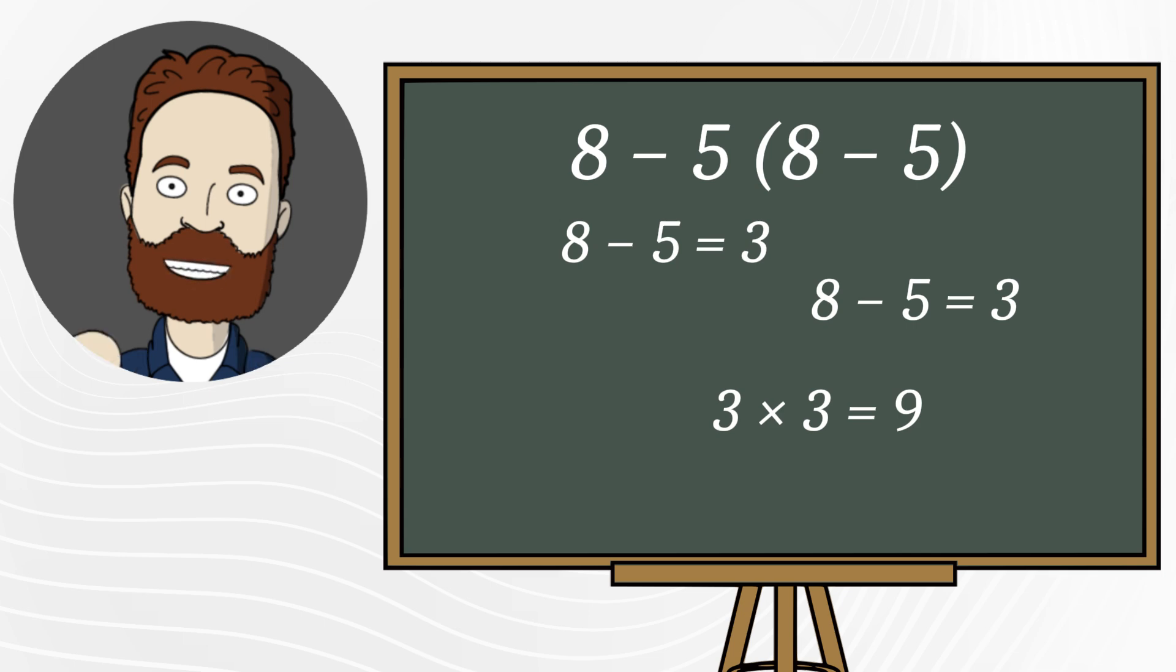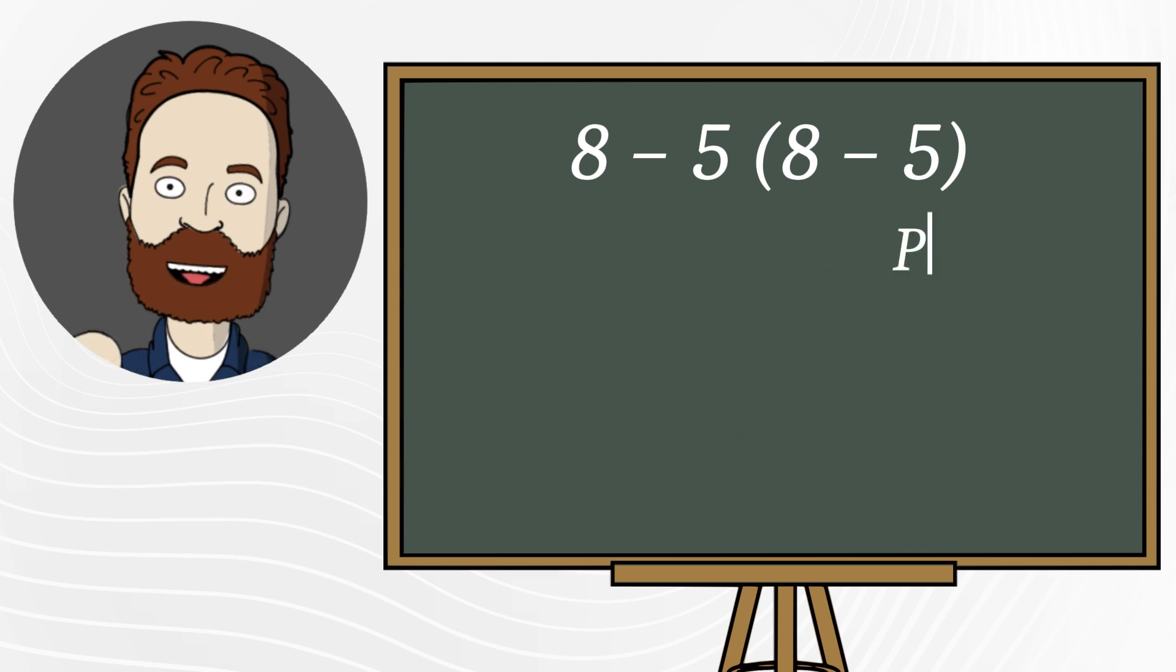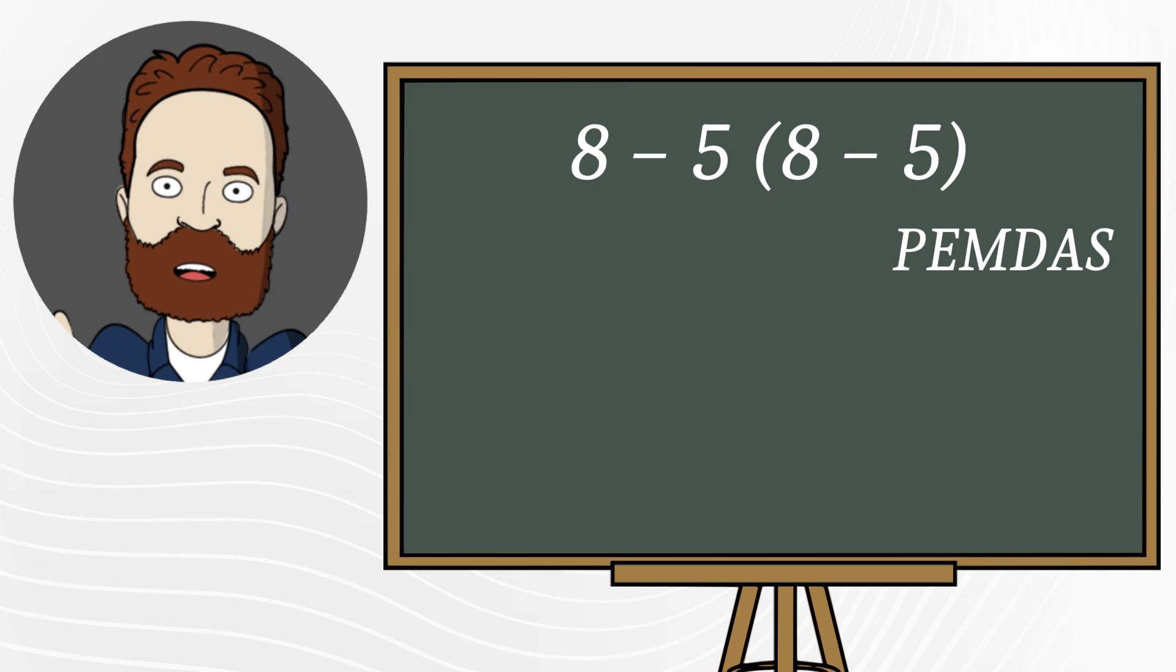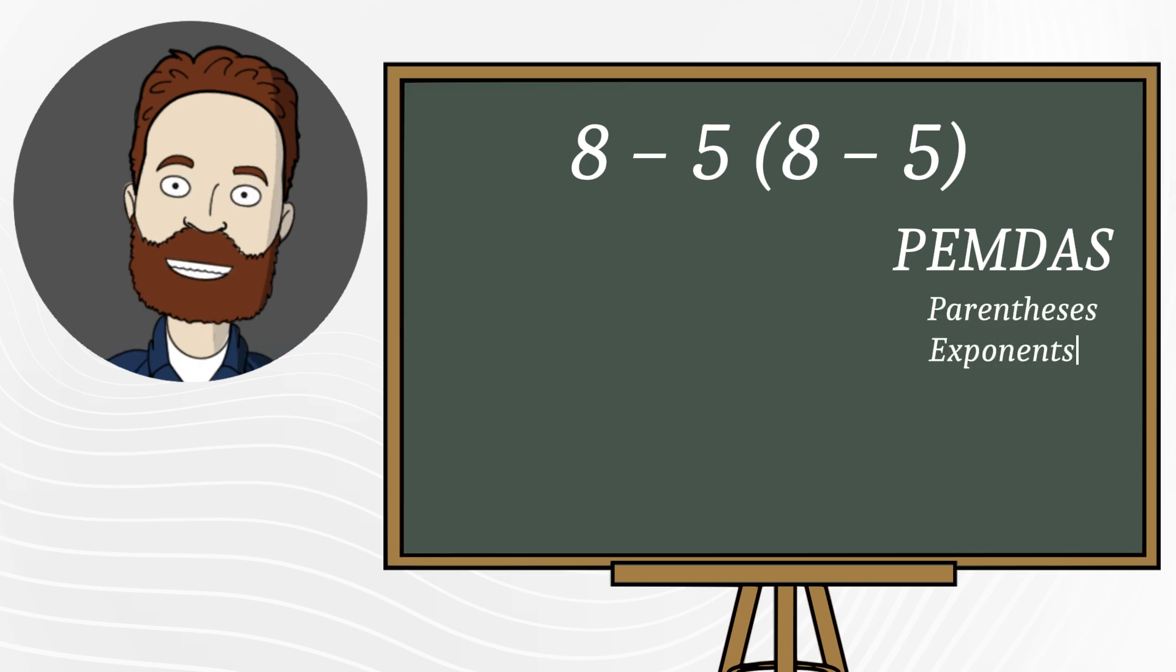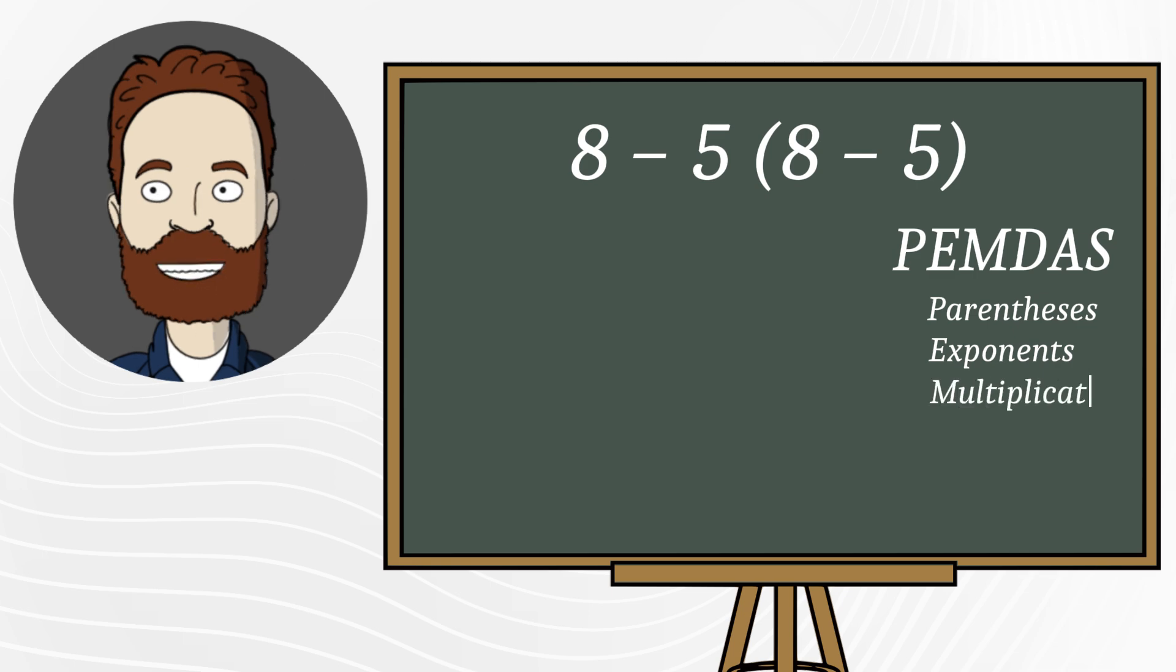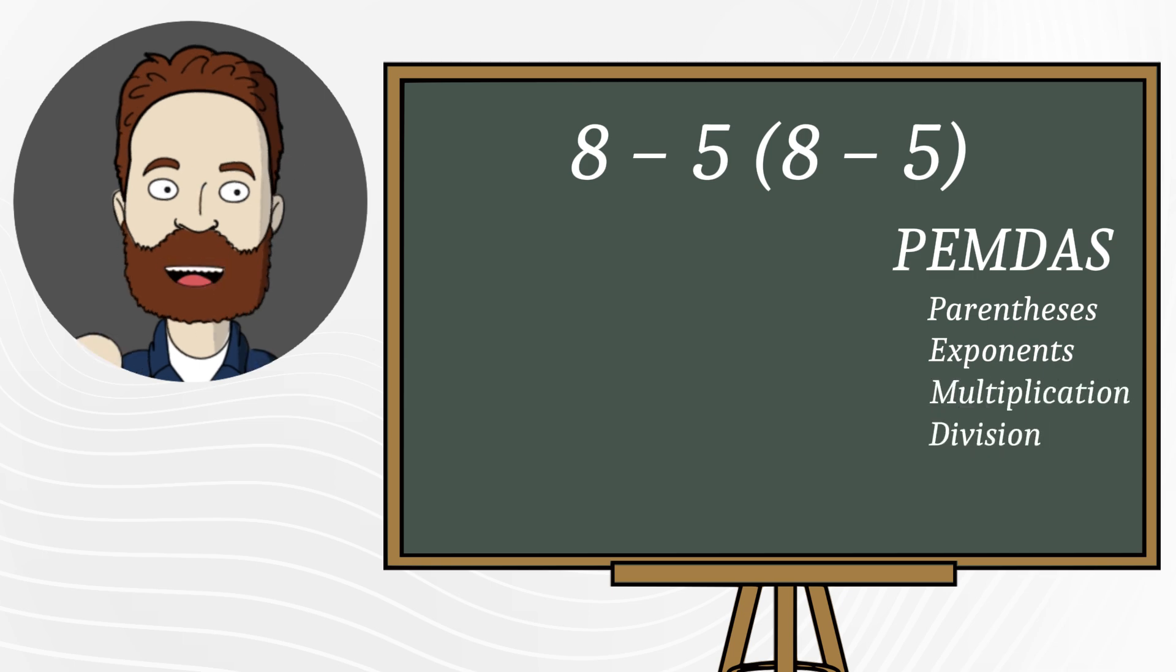The reason is that the order of operations in math works differently. First, we do what's inside the parentheses, then exponents, then multiplication and division, and only at the very end, addition and subtraction.